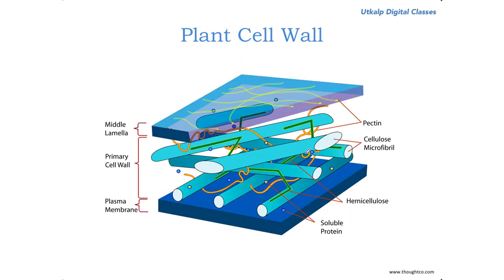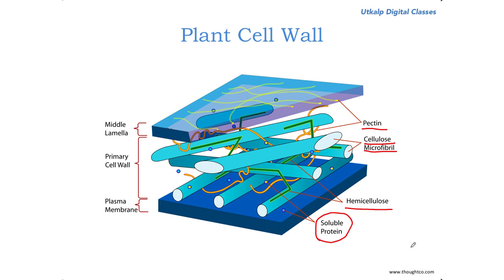Now let's come to the plant cell wall. As you can see, the plant cell wall is essentially composed of cellulose. These cellulose chains are organized into parallel structures called microfibrils. Then you have hemicellulose molecules, pectin molecules, and a few proteins and glycoproteins embedded in the pectin matrix. Cellulose is an unbranched beta-1,4 polymer of glucose, meaning the first carbon of one glucose molecule is linked to the fourth carbon of the next glucose molecule through a glycosidic linkage.